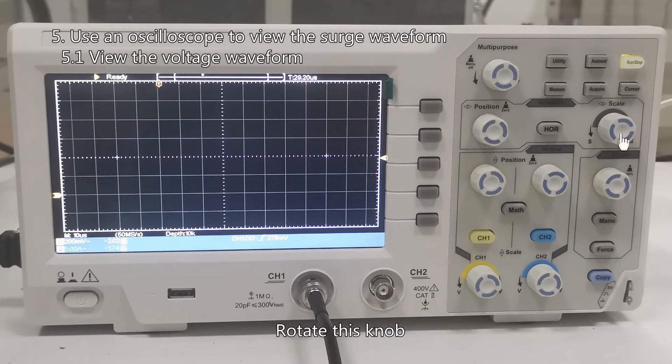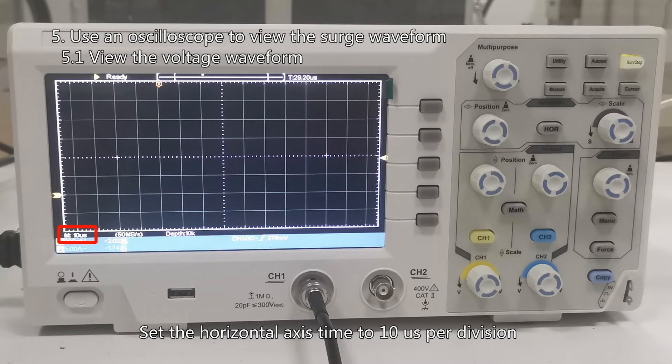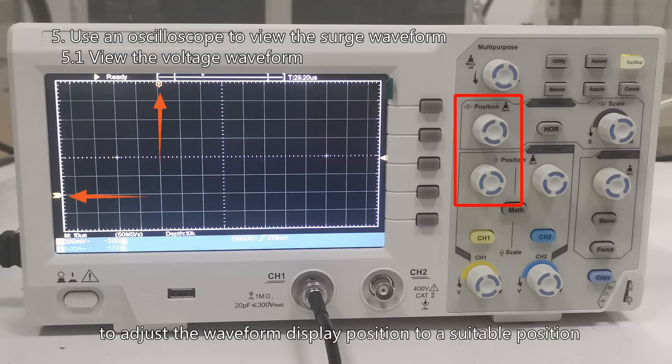Rotate this knob. Set the horizontal axis time to 10 microseconds per division. Adjust the left and right, up and down position knobs to adjust the waveform display position to a suitable position.